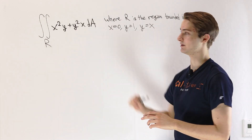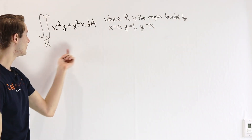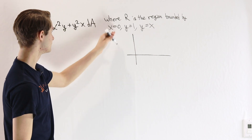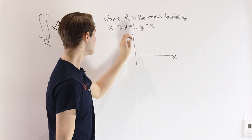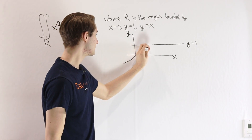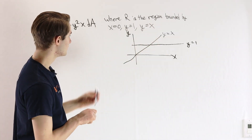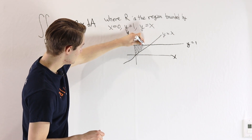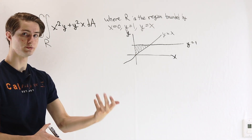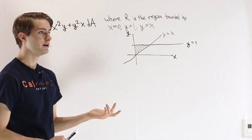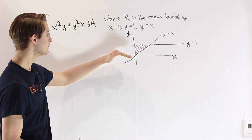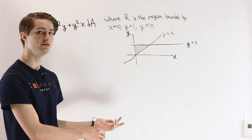Now we have an alternate method of computing the volume by taking slices of area across a particular direction. Let's use that to evaluate this example. First we need to understand the region R over which we're trying to find the volume. It's bounded in two dimensions by three different curves: x equals zero, which is just the y-axis; y equals one; and y equals x. We want the region bounded by these three curves. We want to take area slices, so we have to pick a direction — for now I'm going to choose to go in the x direction. Whether we go in the y direction or the x direction doesn't affect our final result.